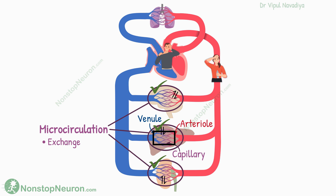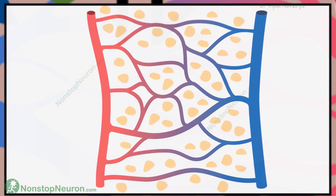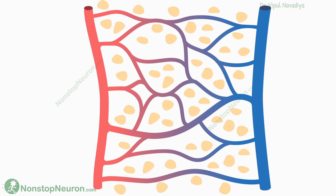Now let's see these structures in more detail. The first thing to note is that the exact morphology varies from organ to organ depending on the needs or functions of that organ. We will see the structure of an ideal microcirculation unit. It has an arteriole at one end, a venule at the other end, and a network of capillaries in between.